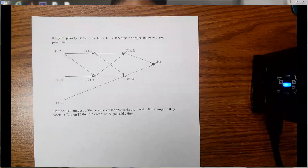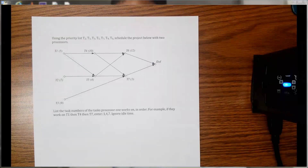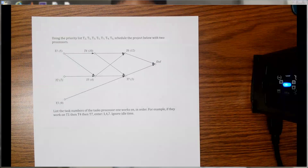Using the priority list t2, t1, t3, t5, t7, t4, t6 — schedule the project below with two processors.